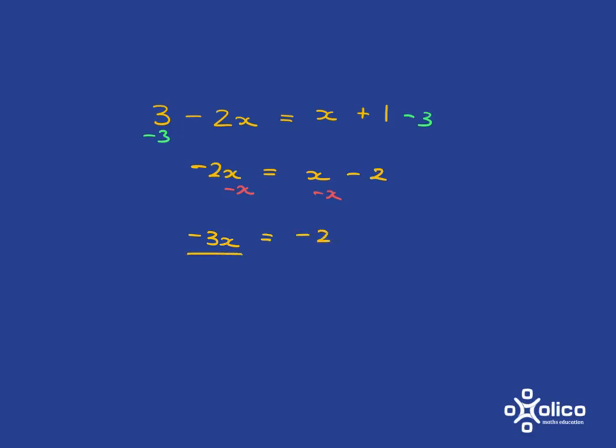And now we just divide both sides by negative 3 to get x on its own. A negative over a negative is a positive, and so our answer is x is two thirds.